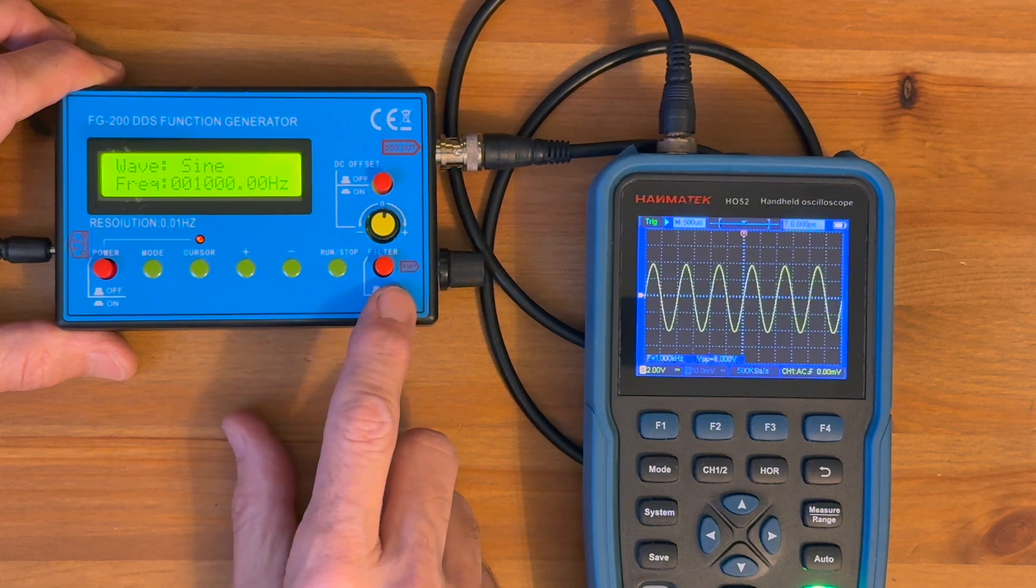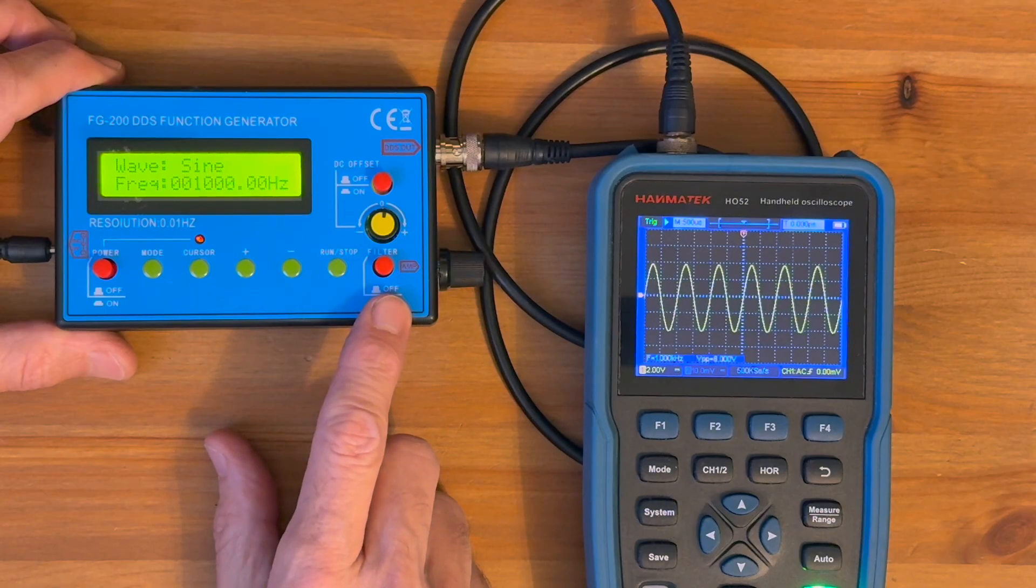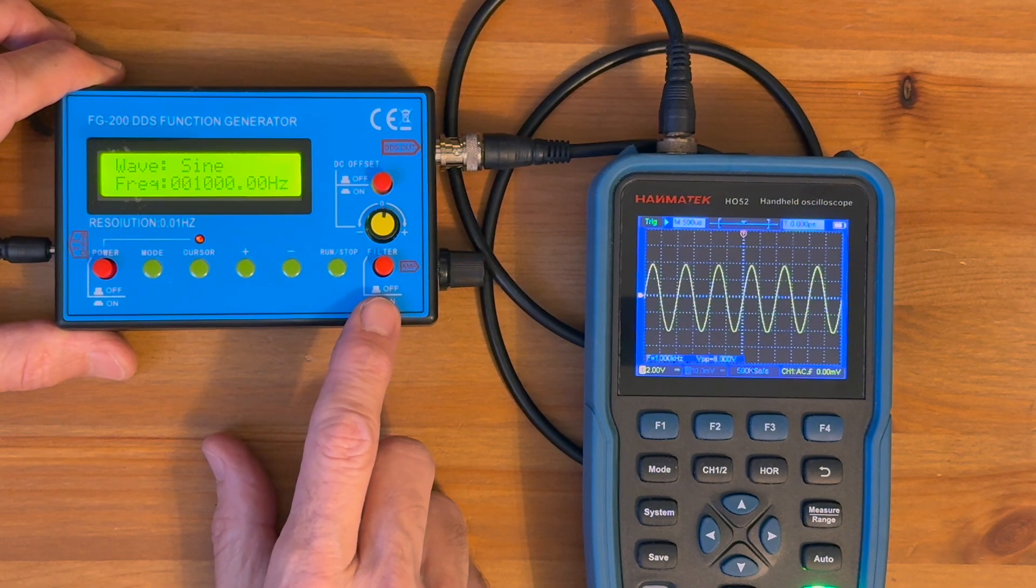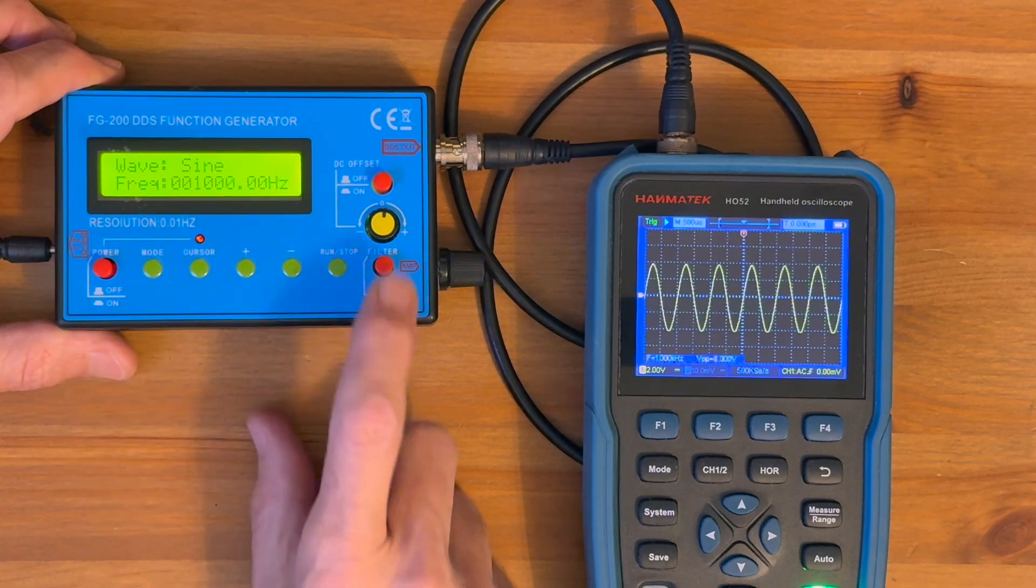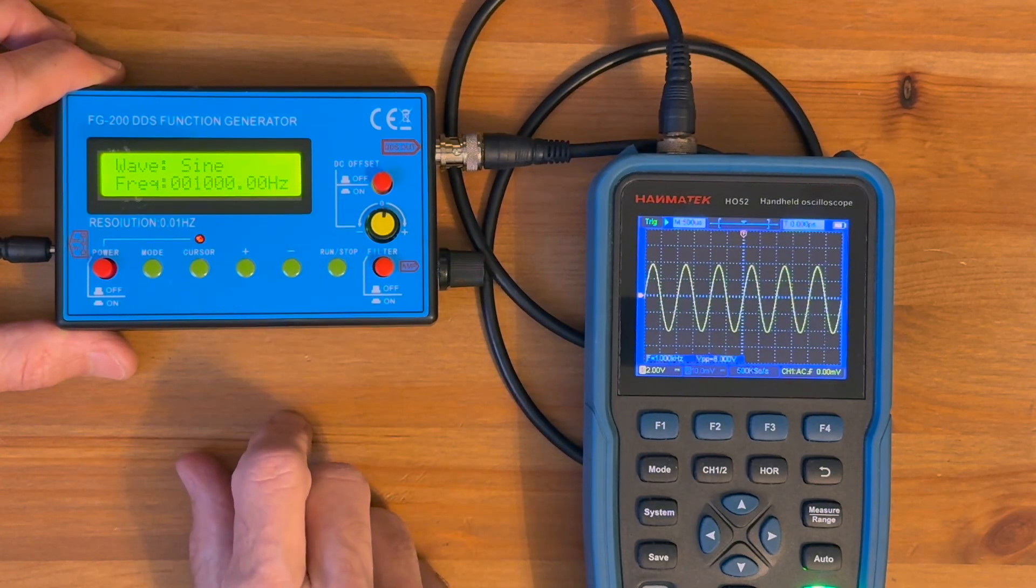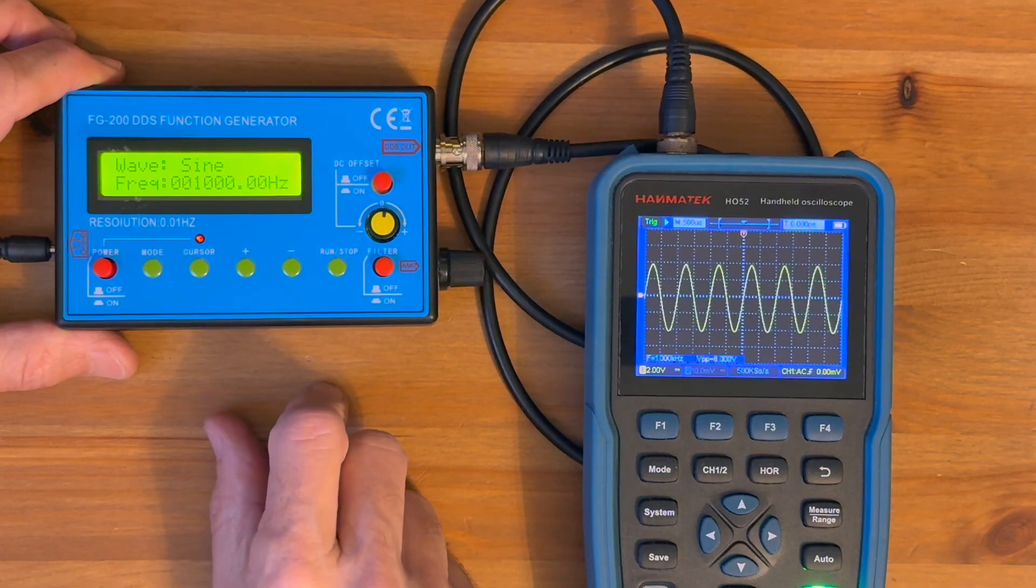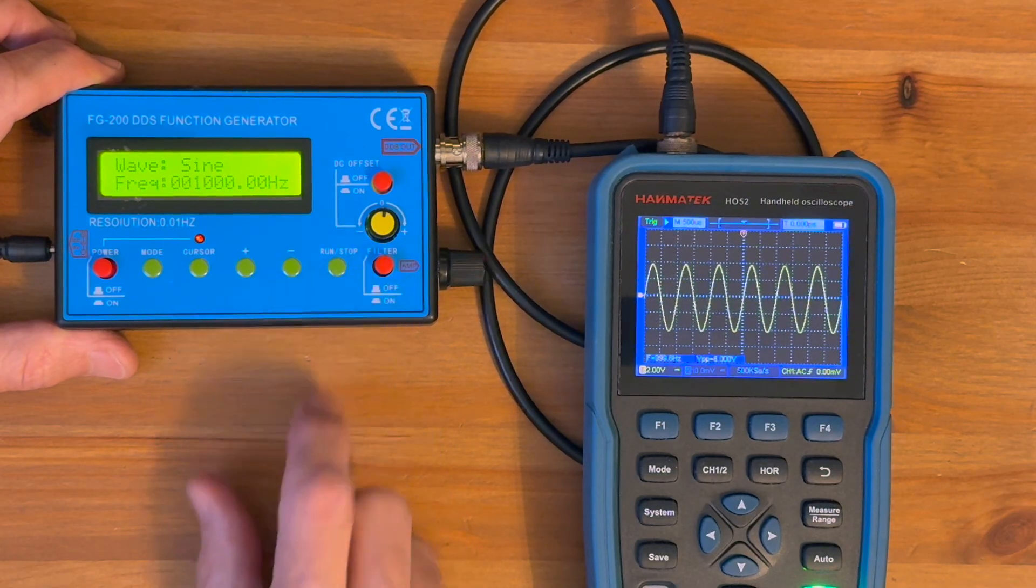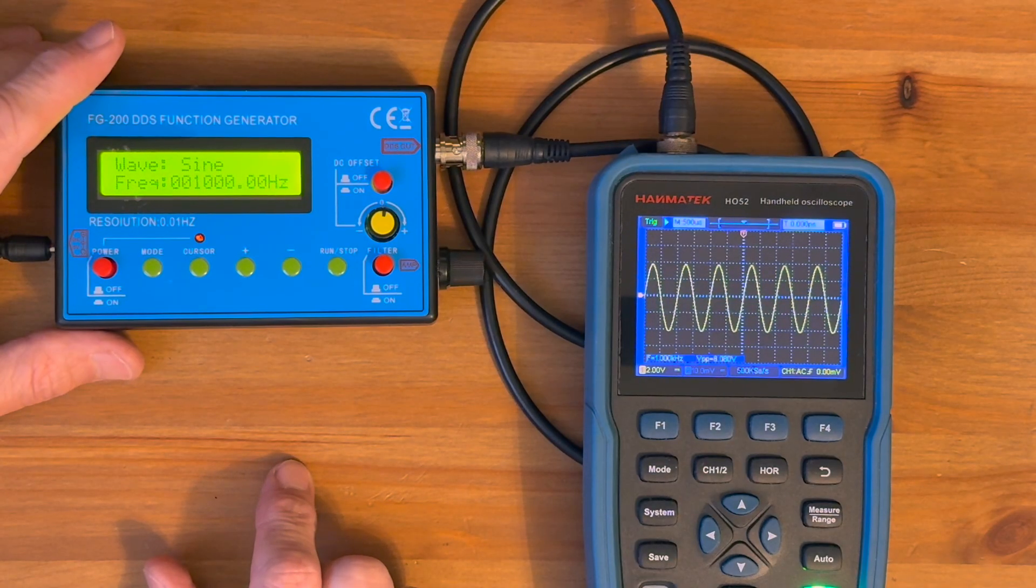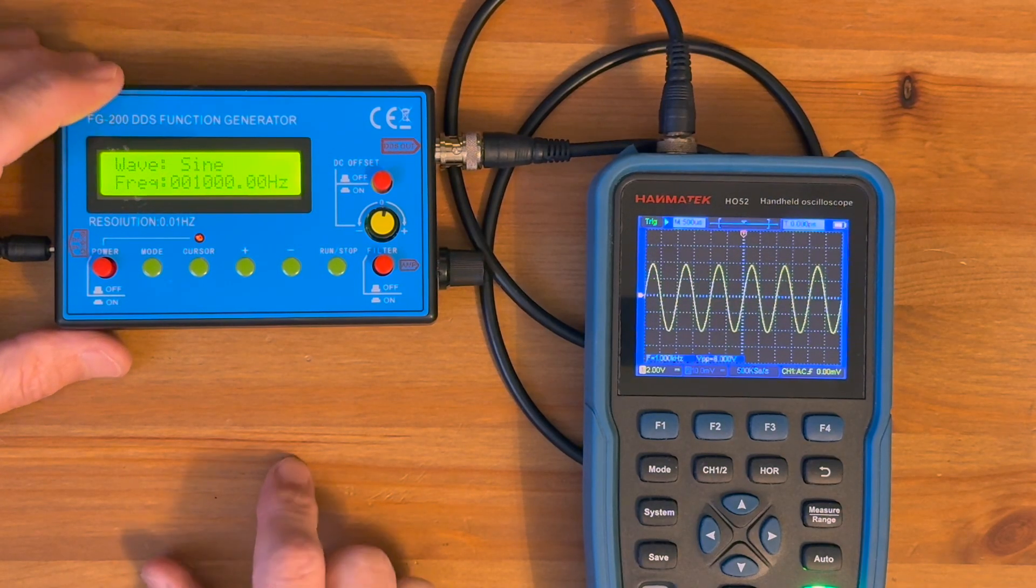And this filter I read basically applies a filter so that at higher frequencies, the waveform looks more like a sine wave when you've got a sine wave set. At this frequency, I don't think you're going to see any difference. And in fact, we don't. The VPP did not change at all. Let's go ahead and see what other waveforms this can produce.